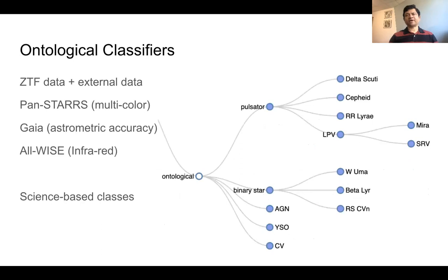Similarly, for the ontological classifiers, which are now more science-based classes, we have hierarchies. We see pulsators at the top and within that we have delta Scuti, Cepheids, RR Lyrae. Even for the RR Lyrae there are subclasses. These use both the ZTF data and external data.